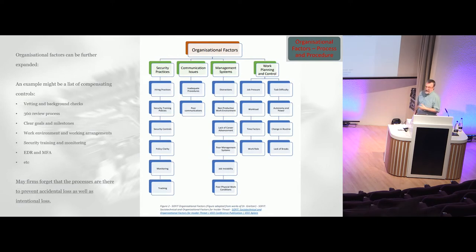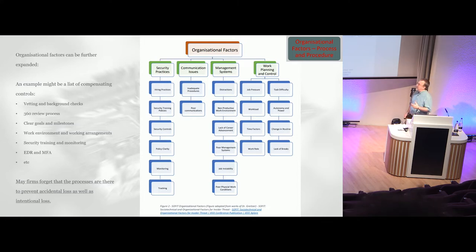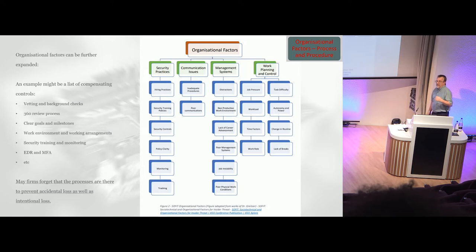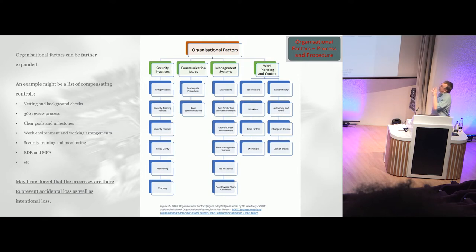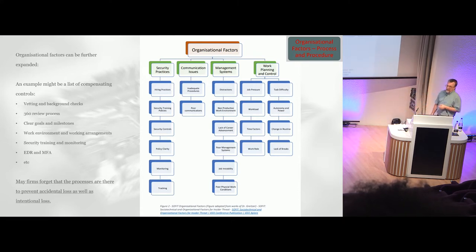You then start to get the organizational factors: the security practices, communication, and management structure. Do you have a blame culture or a support culture? You've got work planning and control — are you putting too much pressure on individuals, asking too much of them, forcing them into a corner? Is their personality such that when cornered, they might lash out? You can start to apply process controls to mitigate this — things like vetting, background checks, review processes — making certain people have what they need to be happy within your workplace.